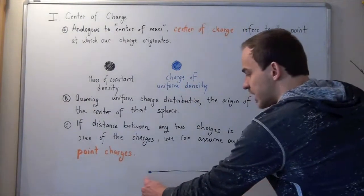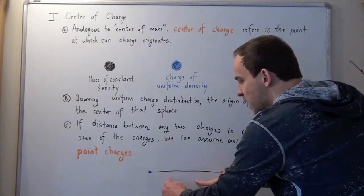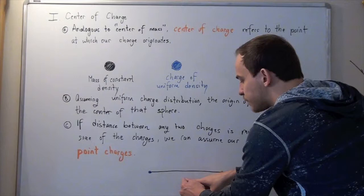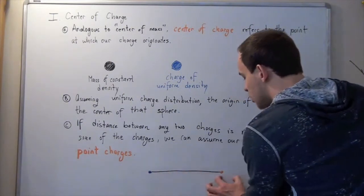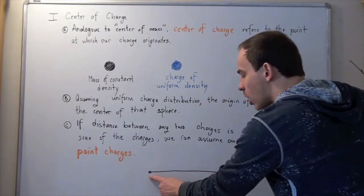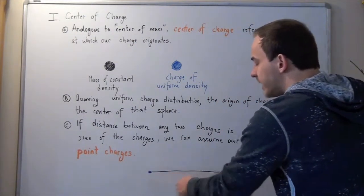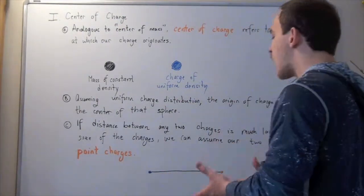That our two charges, say charge q1 and charge q2, if these are very far apart, much further apart than the distance or the size of those two charges, we can shrink those two charges to point charges, and we can simply plug in our values into our equation and find our value.